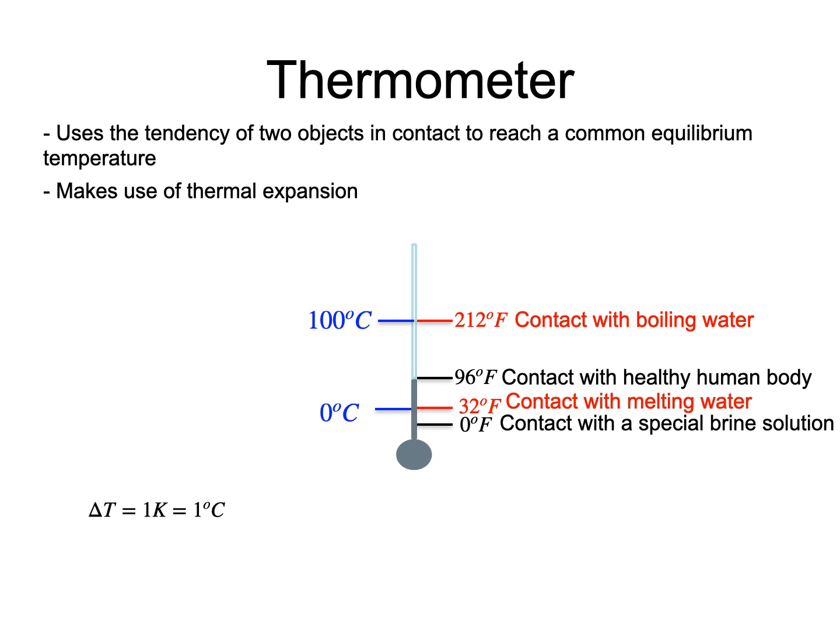With this new scale, the melting of water occurs roughly at 273 Kelvin, and the boiling point of water at 373 Kelvin.